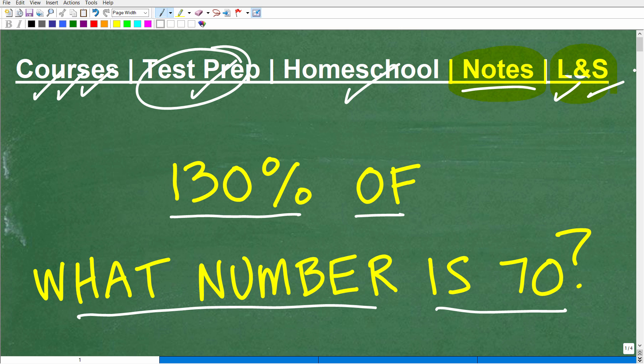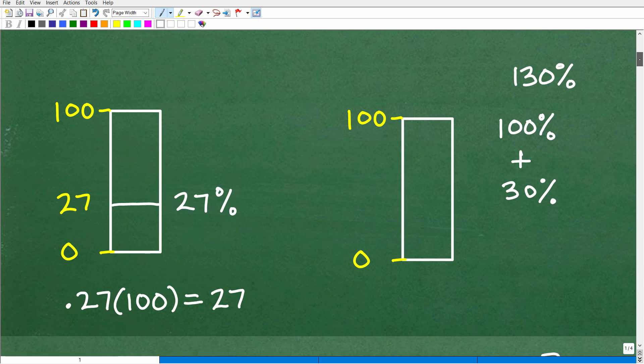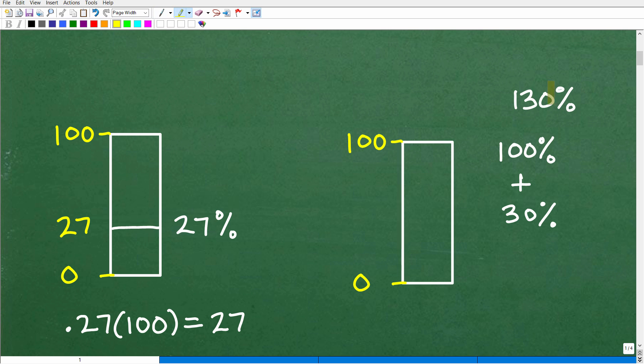All right, so let's get into this. 130% of what number is 70? Please feel free to use a calculator. Never feel bad about using a calculator. Just remember a calculator is a tool. This is not going to solve the problem for you. You have to be able to communicate with your calculator in order to get the right answer out. But what's different about this problem is that we're dealing with a percent that's greater than 100. And I think conceptually, this kind of messes up a lot of people. But let's just kind of quickly review this.